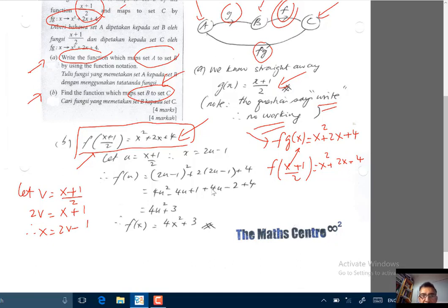In my answer here I have used u. So I'll get x equal to 2u minus 1. In my working here I have used v. It doesn't matter. Then you know x is 2v minus 1.